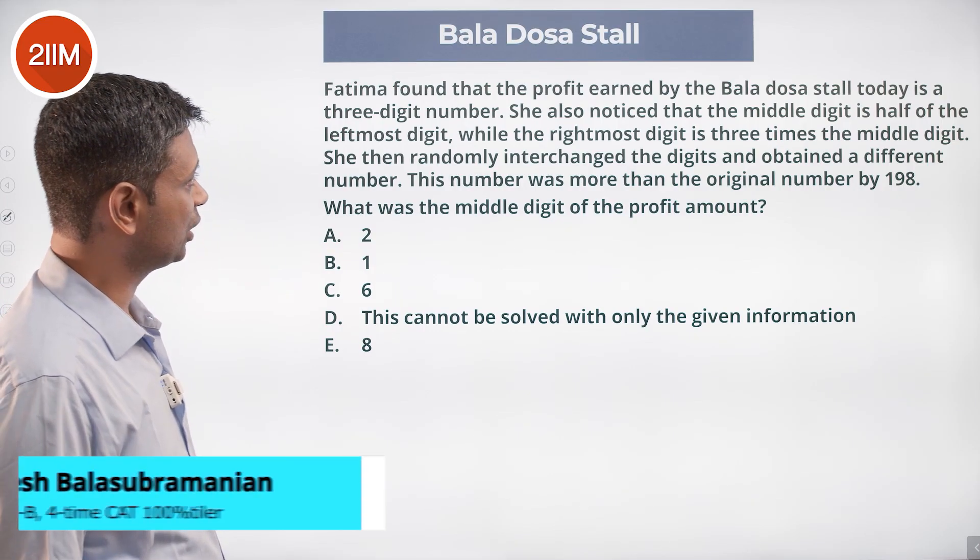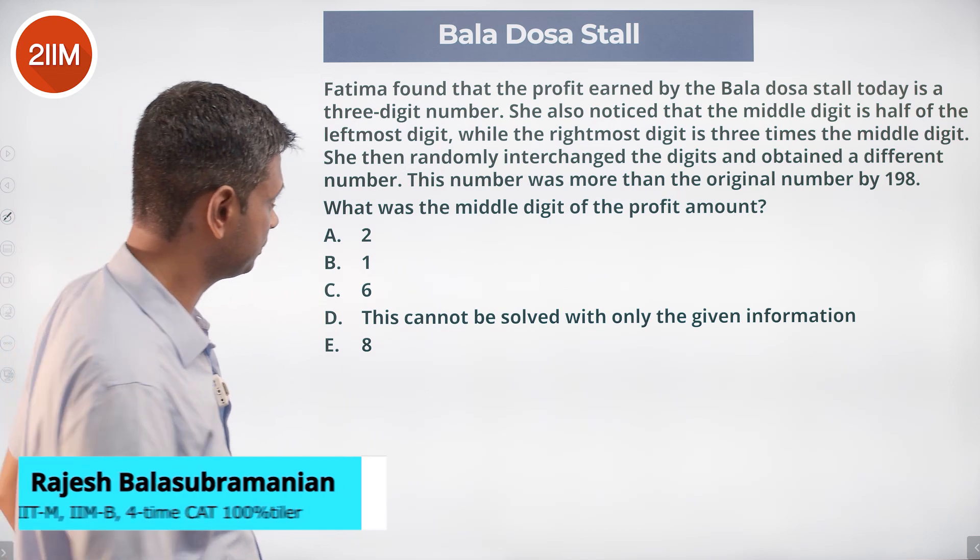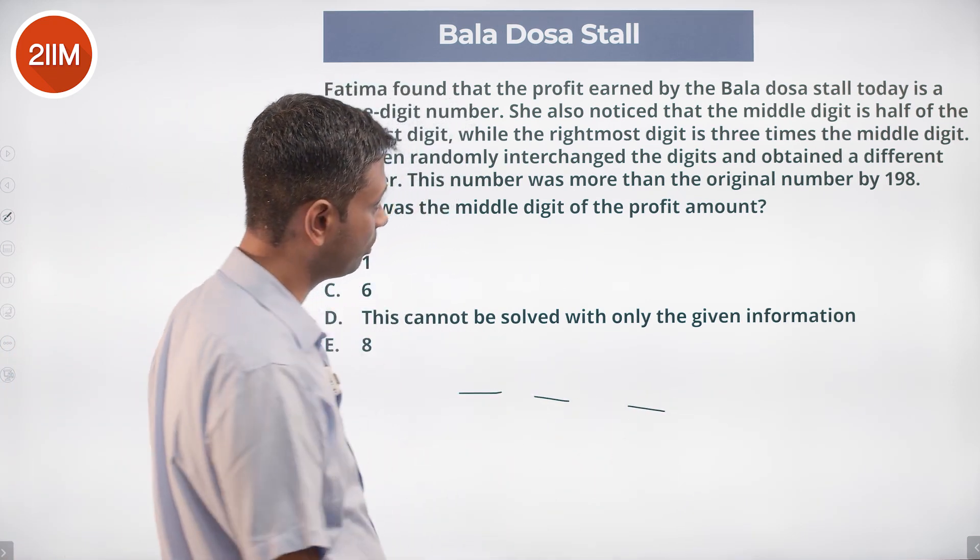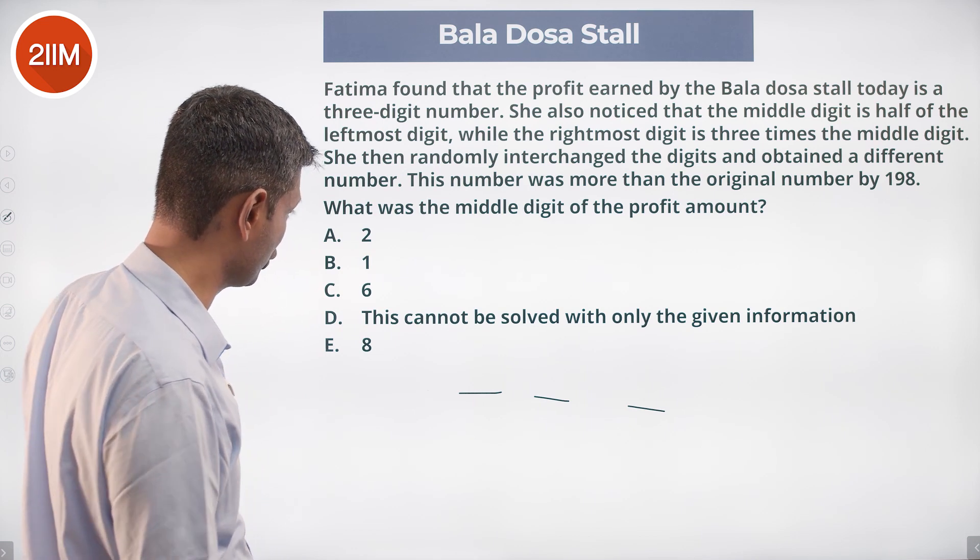Fatima found that the profit earned by Bala Dosa stall today is a three-digit number. She also noticed the middle digit is half of the leftmost digit.